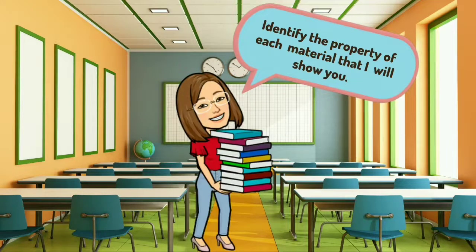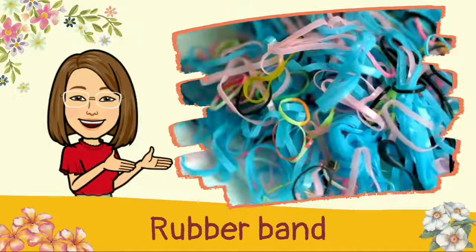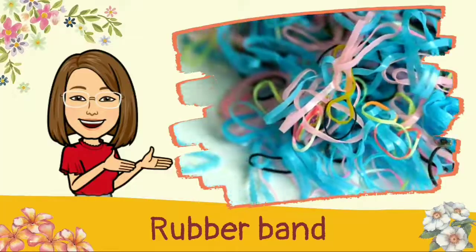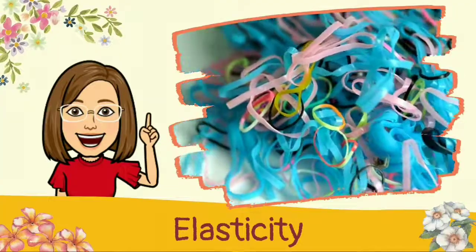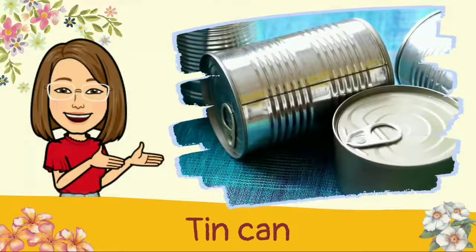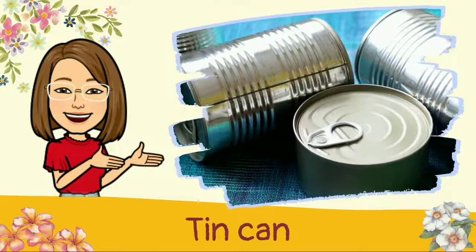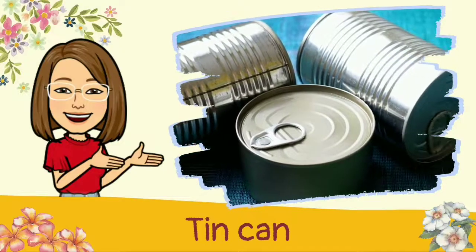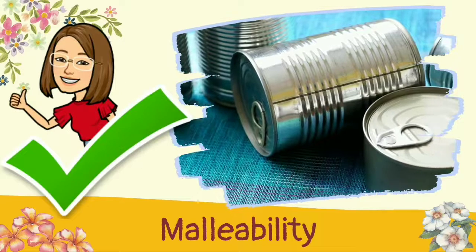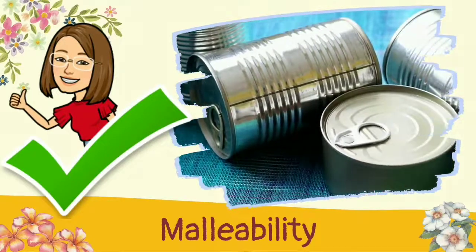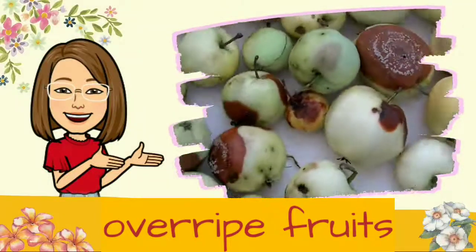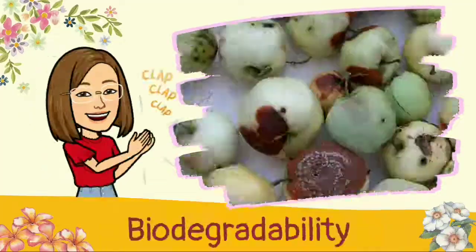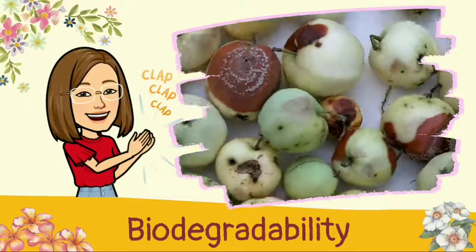Identify the property of each material shown. What property of solid material does the rubber band show? Elasticity! Great, it shows elasticity! How about the tin can? What property does it show? Malleability! Yes, it shows malleability. How about the overripe fruits? Biodegradability! That's correct, it shows biodegradability.